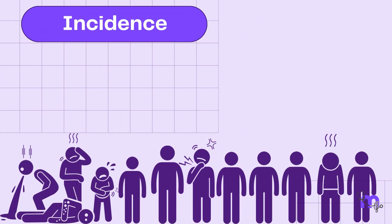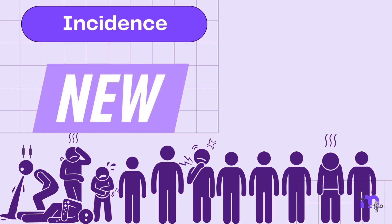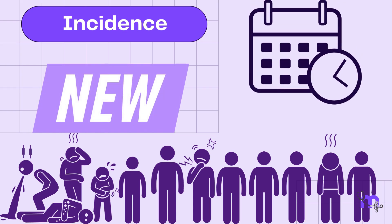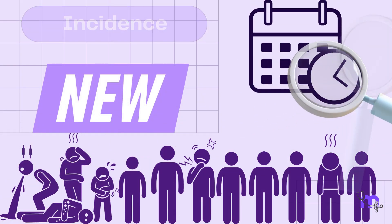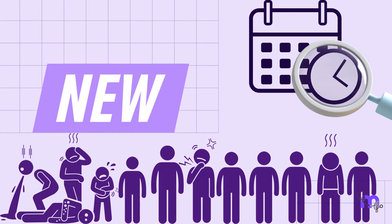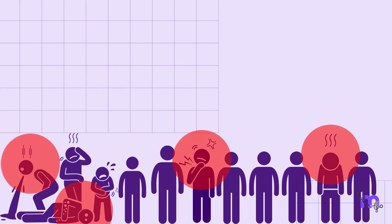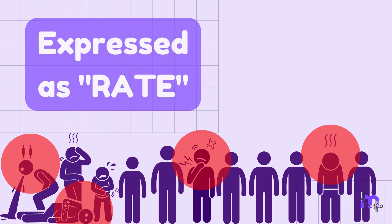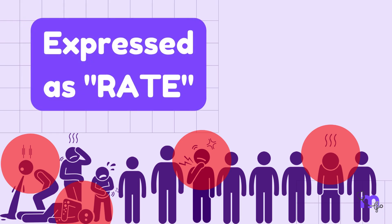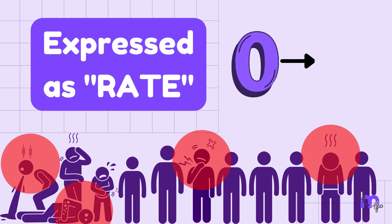Incidence is the number of new cases of a specific disease occurring in a defined population during a specific period. It measures how quickly a disease is spreading or how likely someone is to develop a disease. It is usually expressed as a rate and can range from zero to infinity.